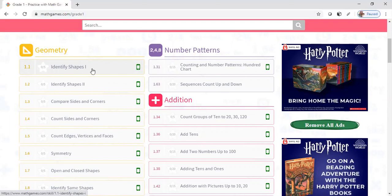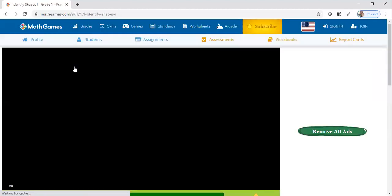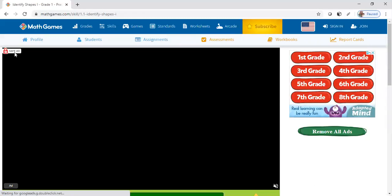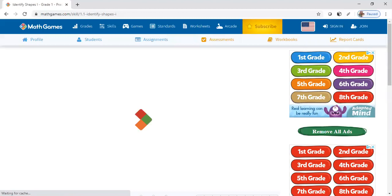So let me show you this example. Under geometry, the first one is Identify Shapes. And in each grade level it's the same standard concept—you're just working under that grade level. So this is what it's going to look like when it comes up.